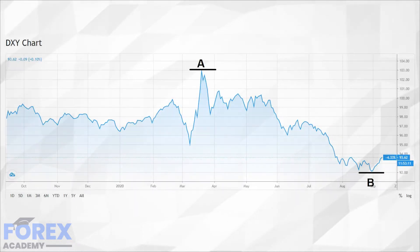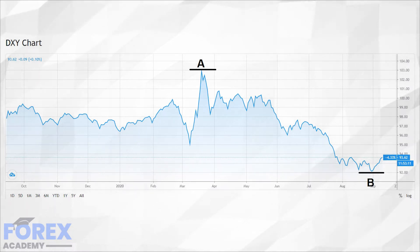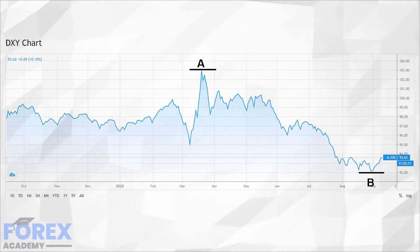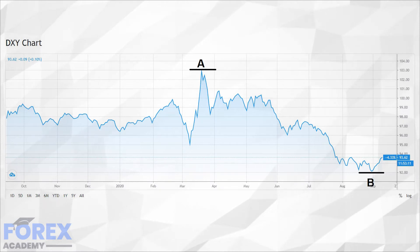First of all we have the dollar index chart known as the DXY, where the dollar is measured against a basket of six major currencies. This includes the yen, the pound, the Australian dollar, the New Zealand dollar, the Swiss franc, the euro and the Canadian dollar.